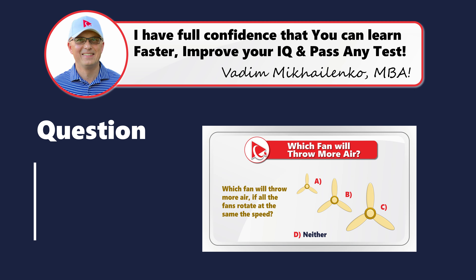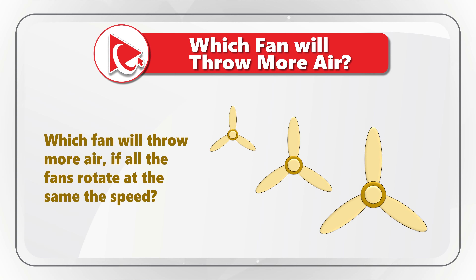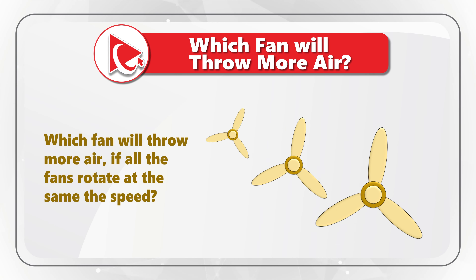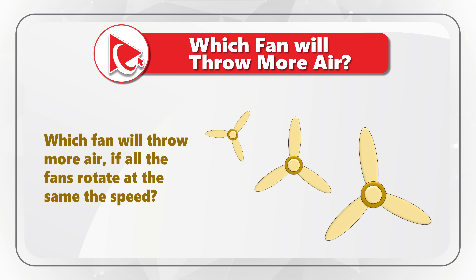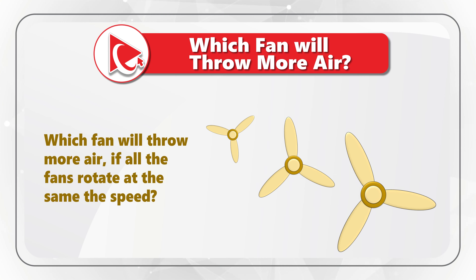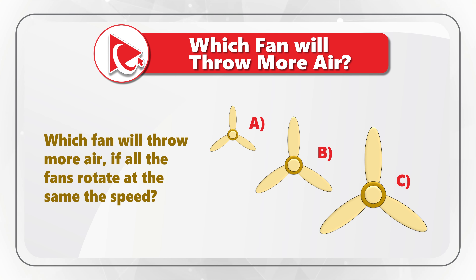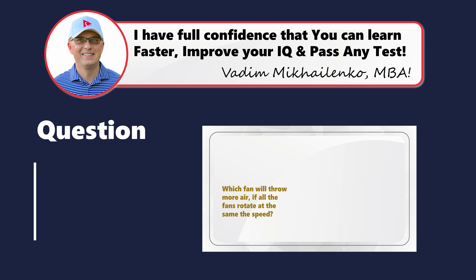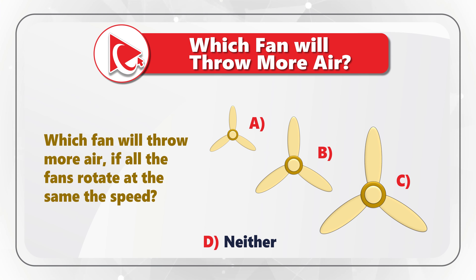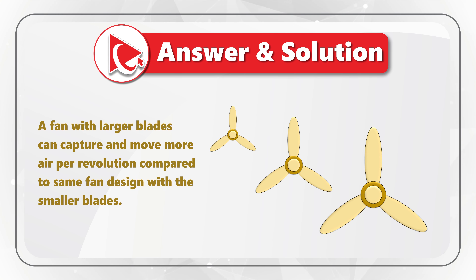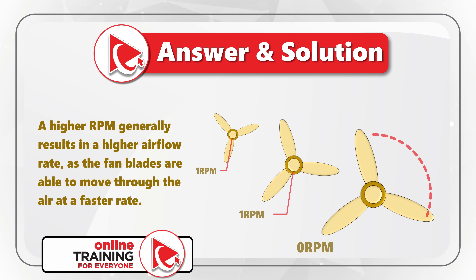This is one of the most exciting questions because it allows you to test your analytical skills and understanding of physics. You need to determine which fan throws more air if all the fans rotate at the same speed. The choices are Fan A, Fan B, Fan C, and Choice D: neither fan. There are two key factors to help determine the airflow rate: the size of the fan's blades, and the rotational speed measured in RPMs — revolutions per minute.